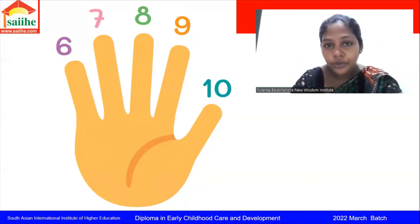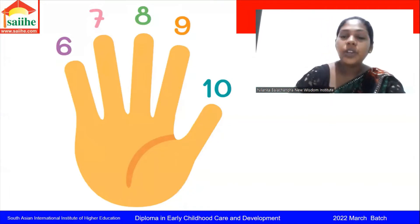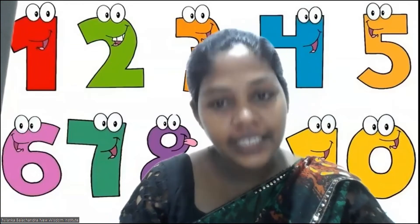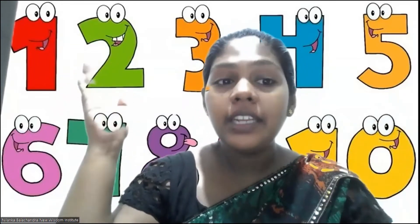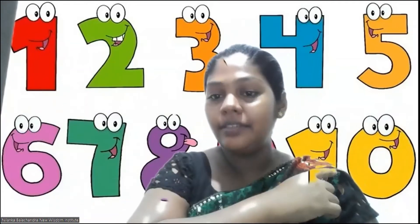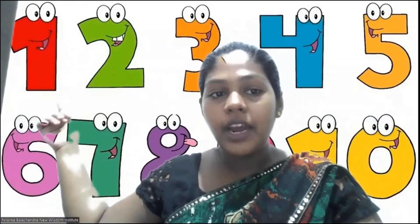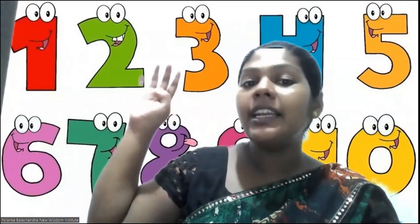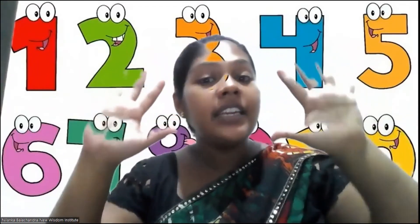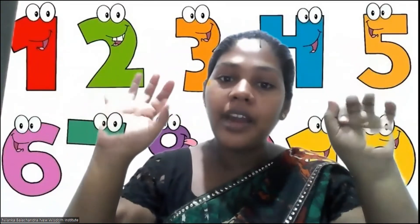Now teacher is going to sing a number song. Do you like to sing the number song with me? Can you see what is behind me? There are ten numbers. I will point one to ten. One little, two little, three little fingers, four little, five little, six little fingers, seven little, eight little, nine little fingers, ten little fingers on my hands.